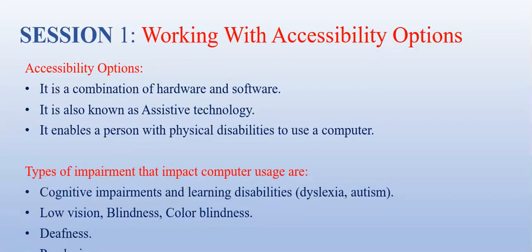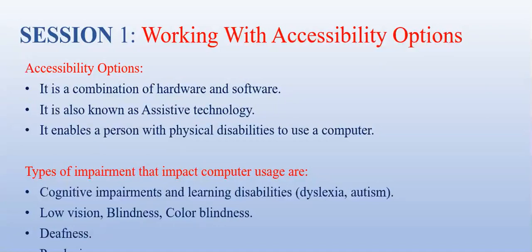First of all, we will discuss what Accessibility Options are. Computer Accessibility refers to the user-friendliness of a computer system for all, regardless of their disability. This is mainly a software issue. However, when a combination of hardware and software enables a person with a disability or impairment to use a computer, it is known as Assistive Technology.